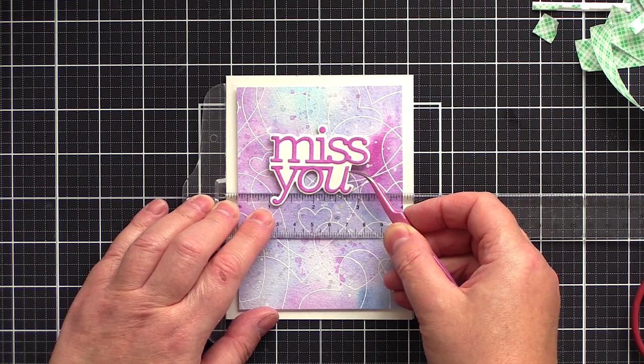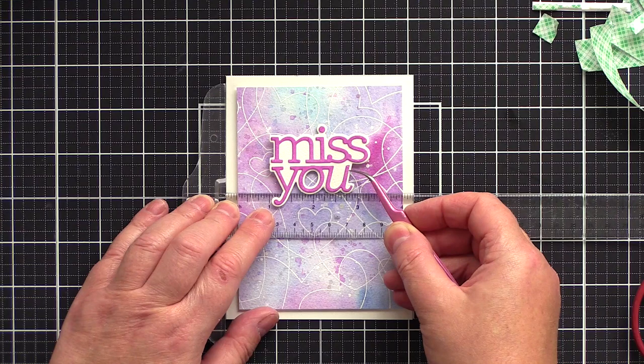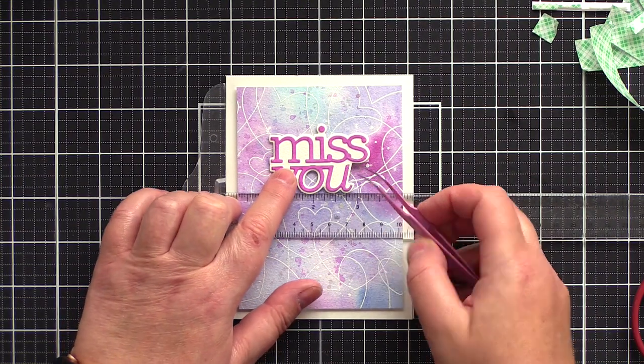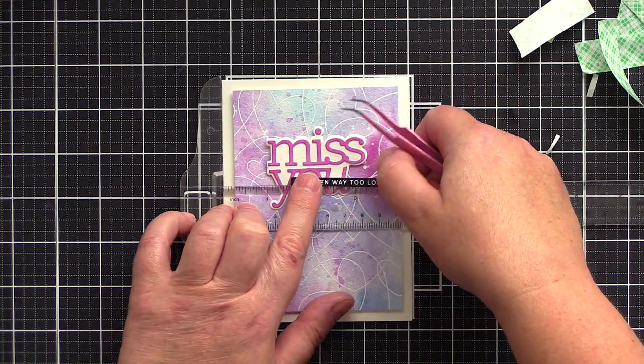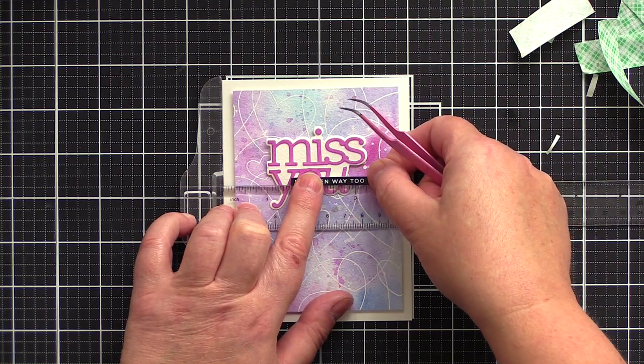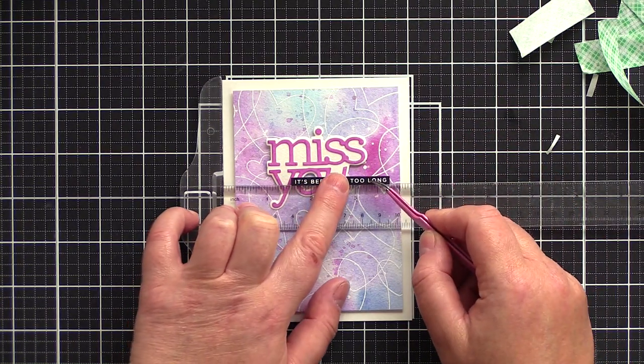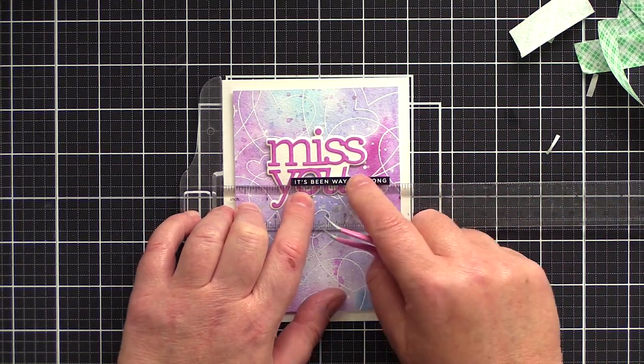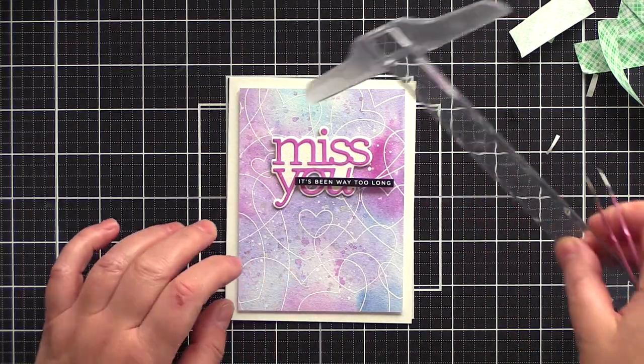This leaves the focal point less lost in a big space and also frames the panel nicely with a wider border from the card base which I'd cut and scored from ivory card.